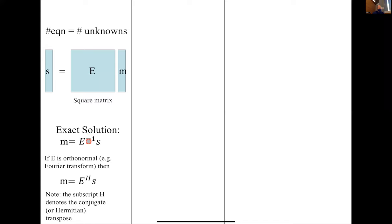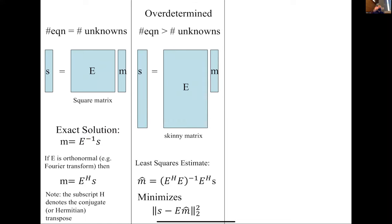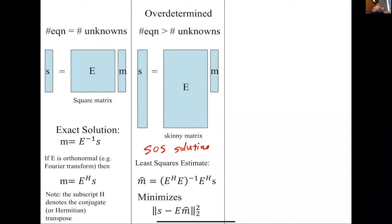The next thing is: what happens if we have more coils — many coils imaging at the same time? That's known as parallel imaging. In that case, we'd have more equations than unknowns, which is called an overdetermined problem. We have a least squares estimate, giving us the sum-of-squares solution. You take every coil, square it, add those squares, and take the square root. That's a pretty good estimation, and it can still be seen on scanners when you have multiple coils running a standard sequence.